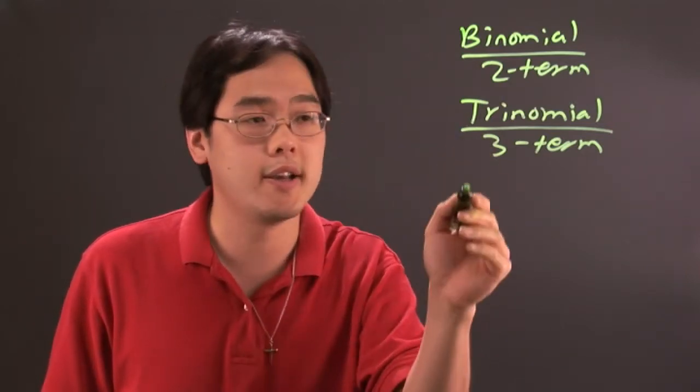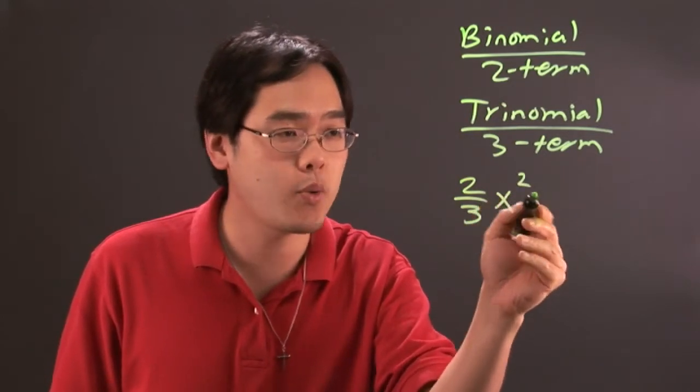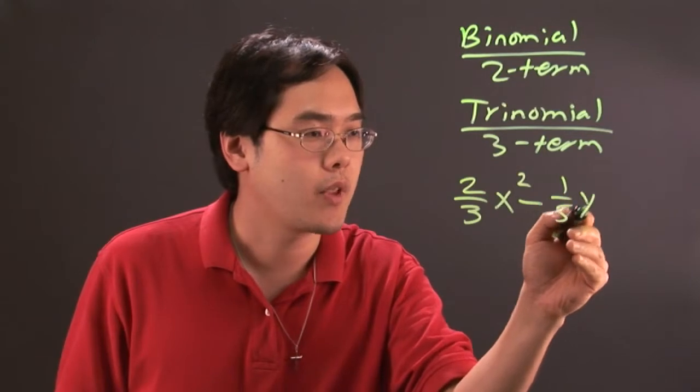So, in other words, a fraction binomial would be two-thirds x squared minus, let's just say, one-fifth y to the third.